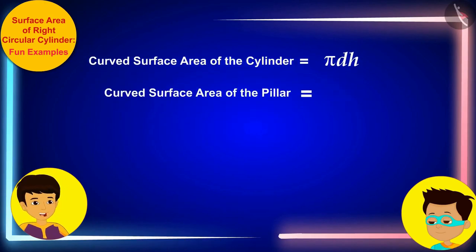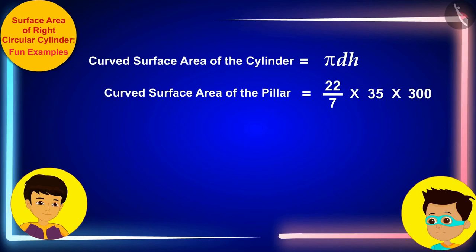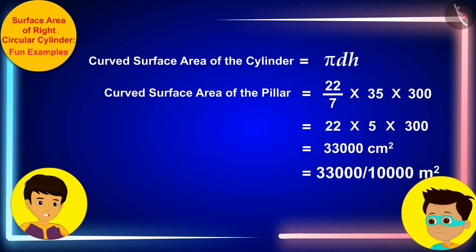Now, we have to write the diameter of the pillar 35 centimeter in place of d and the height of the pillar 3 meter or 300 centimeter instead of h respectively and solve. On solving in this way, we can see that the curved surface area of the cylindrical pillar is 33,000 square centimeters or 33,000 divided by 10,000 that is 3.3 square meters.